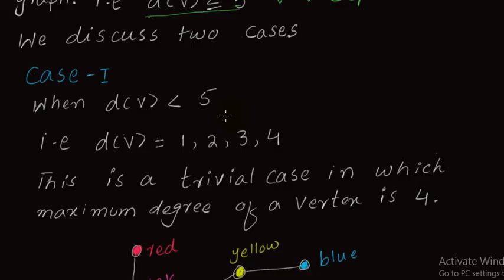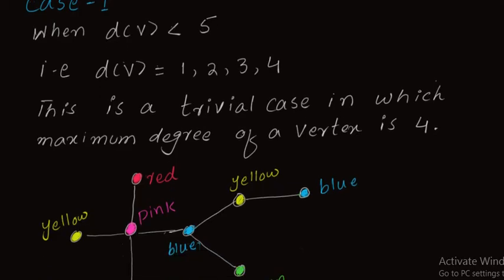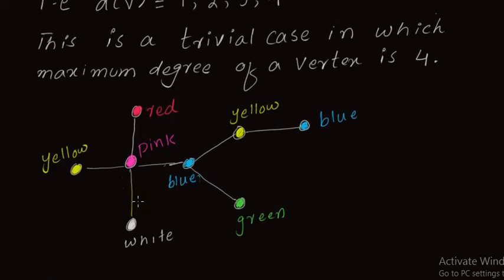We discuss two main cases. In the first case, we consider a degree less than five — meaning the maximum degree is equal to four or less. So degree less than five means the degree may be one, two, three, or four. In this case, when the degree of a vertex is less than five, as shown in the figure, we can easily use five colors to color this graph.